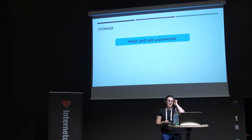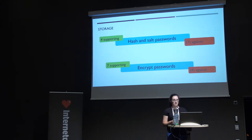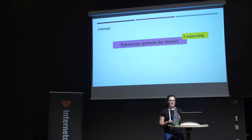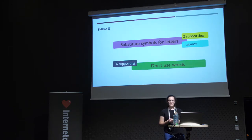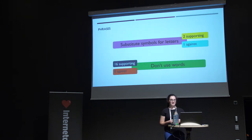On password storage, four sources supported hashing and salting passwords, but seven said to encrypt passwords — so they contradict each other. On phrases, two were in favor of substituting symbols for letters, and one was against. On 'don't use words': sixteen pieces of advice said don't use words, but we know from leaked data sets that everyone really uses words for their passwords — zero were against the advice, which shows the advice maybe isn't having a great effect anyway.